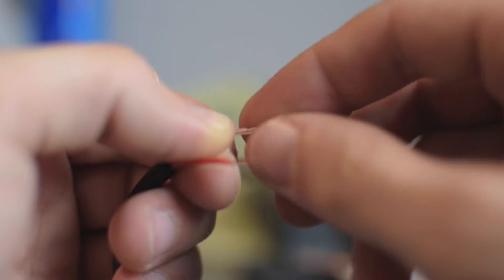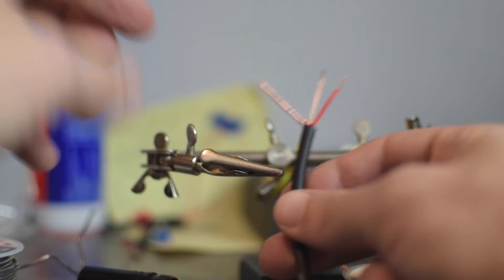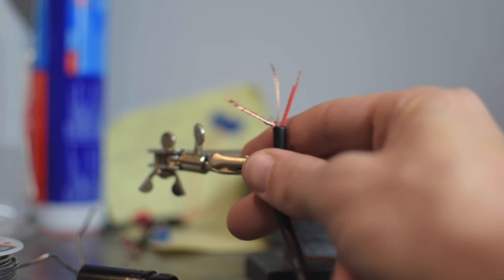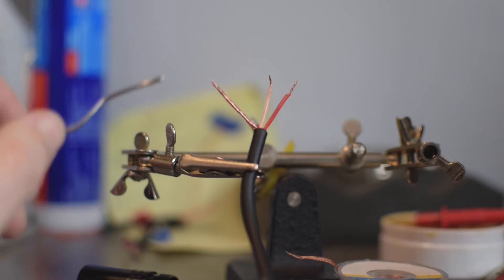This is the insulation that they put in with the copper wire to give it this extra Mogami zing, but it's not going to help us with the soldering process. So we're just going to burn it off with our lighter.